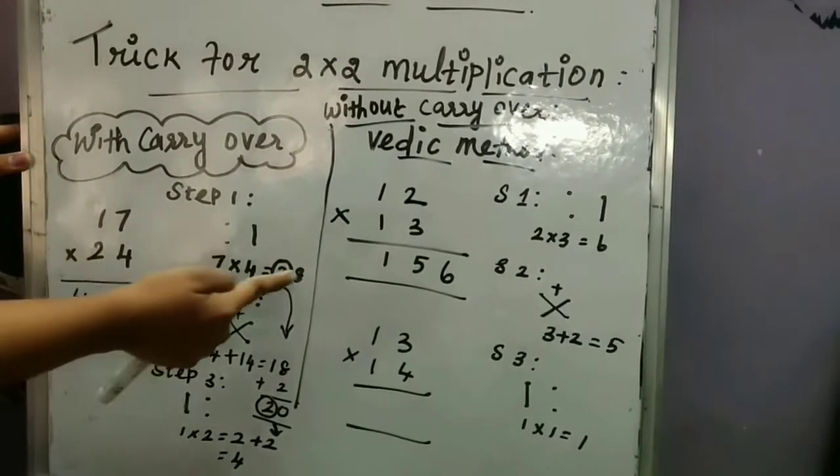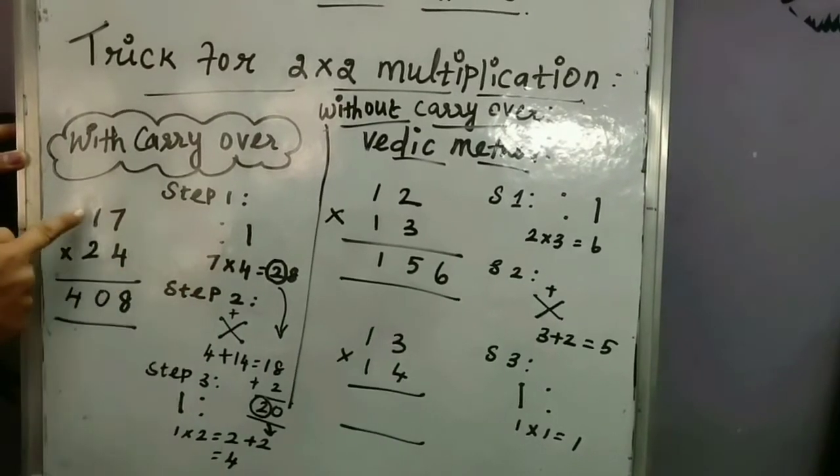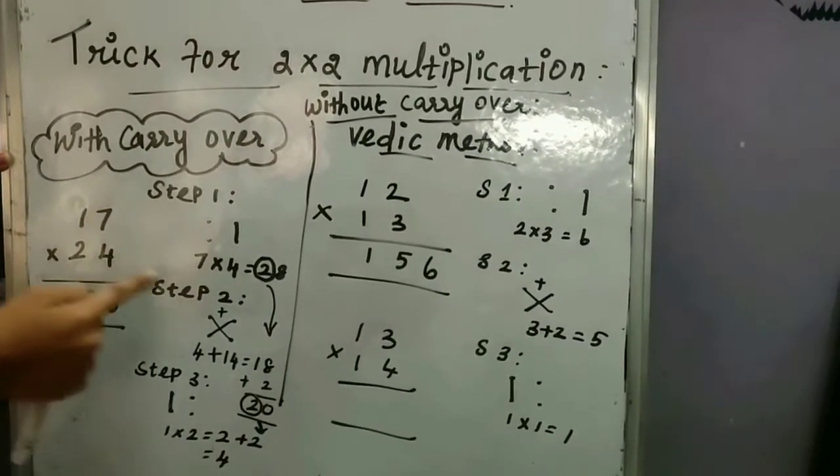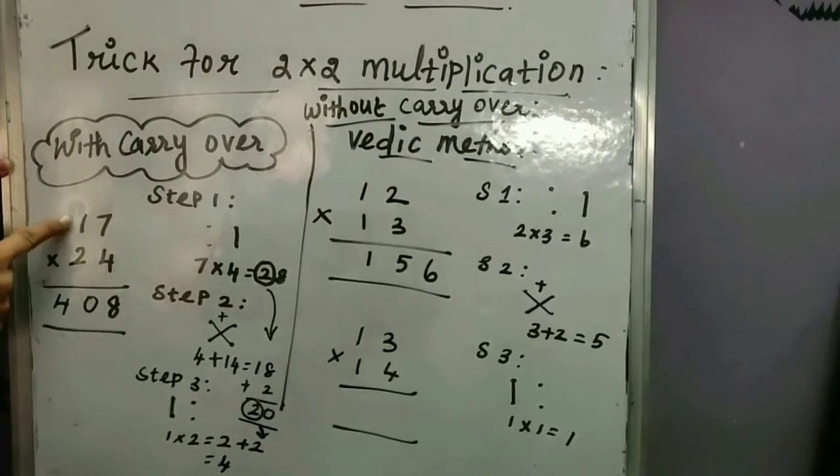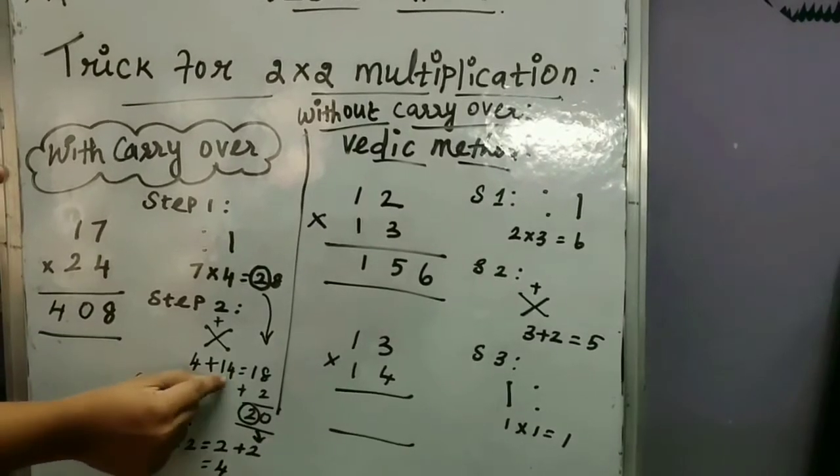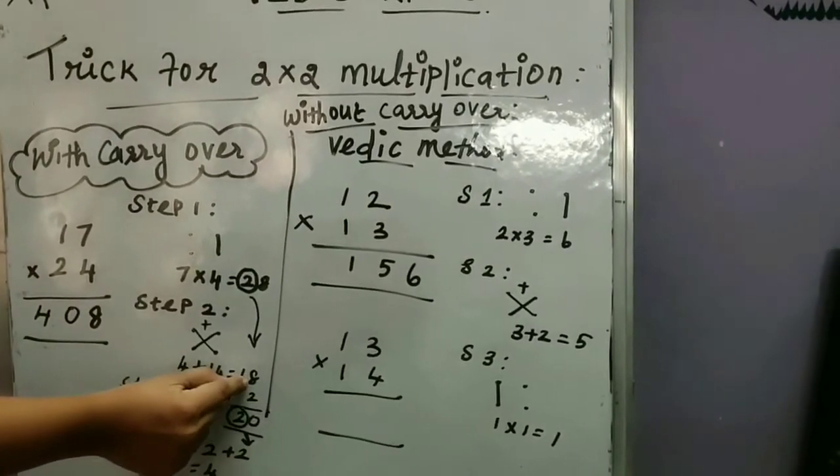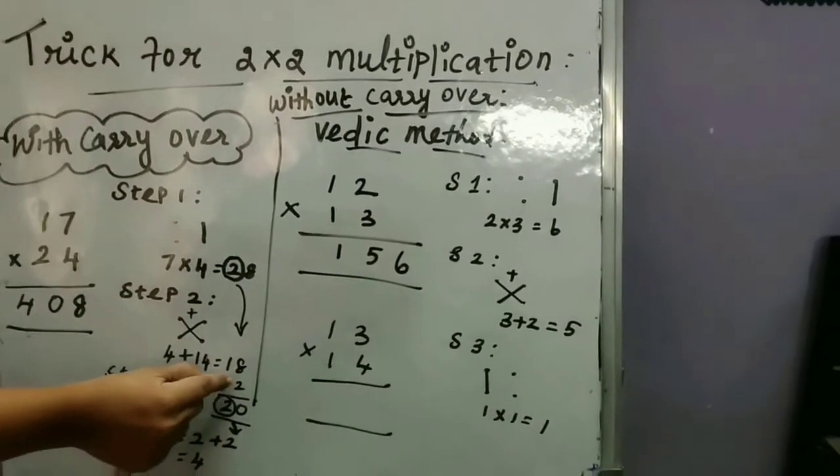What we should do, always we should take only the ones place to the answer. So here 8 to be taken here, and 2 you keep it in mind. Then step 2: Two dots followed by the two dots, this time cross multiplying we should add. I mean 4 times 1, which is 4, plus 7 times 2, which is 14.